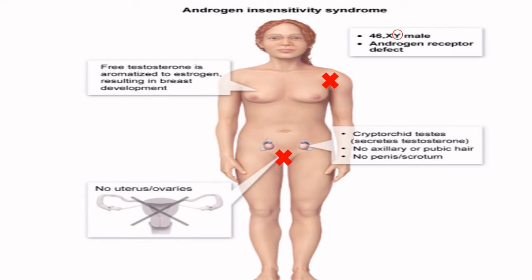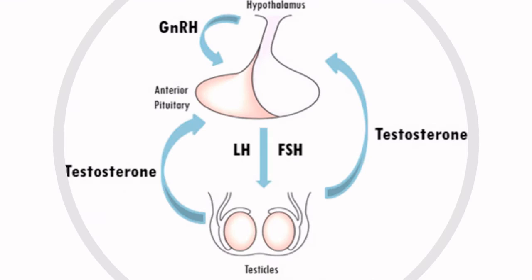So this patient, as an XY male, will have testes — but the testes will be undescended. These testes produce testosterone, which gets aromatized to estrogen, causing breast development. Because there is no end-tissue response to androgens, there is no axillary or pubic hair and no external male genitalia. And because they have Sertoli cells that produced Müllerian inhibitory factor, internal female genital development is blocked — so they do not have a uterus.